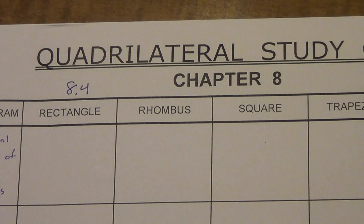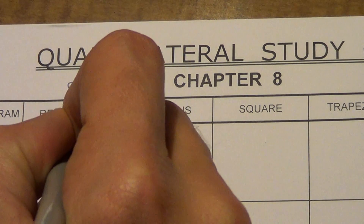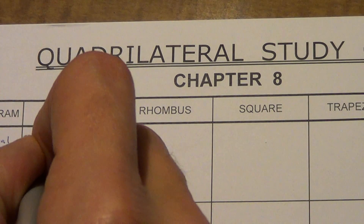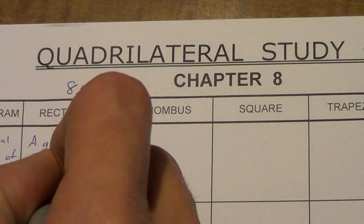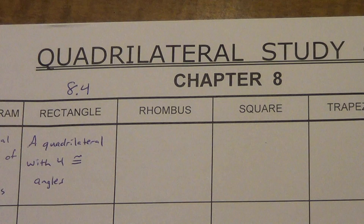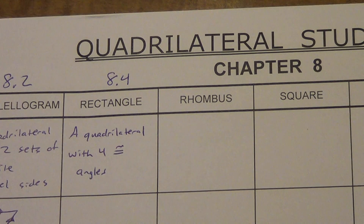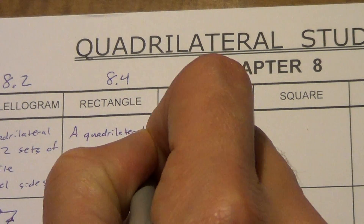A definition of a rectangle: a rectangle is a quadrilateral with four congruent angles. Using the (n-2) × 180 formula, (4-2) is 2, and 2 × 180 is 360 degrees. If we divide that by 4, we get 90 degrees each.